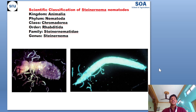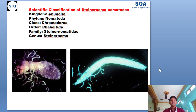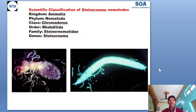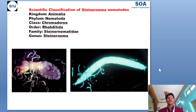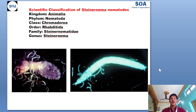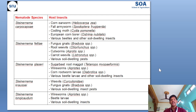The scientific classification of Steinernema nematode: it belongs to kingdom Animalia, phylum Nematoda, class Chromadorea, order Rhabditida, family Steinernematidae, and genus Steinernema. Let us see the various species under Steinernema nematode and their host insects.